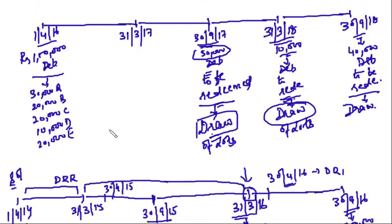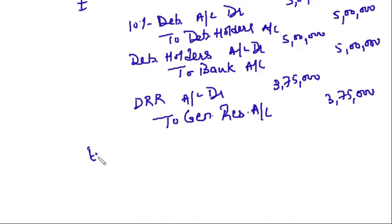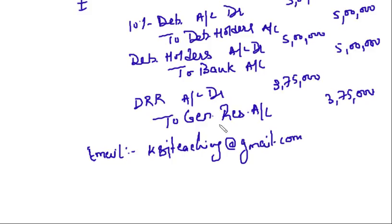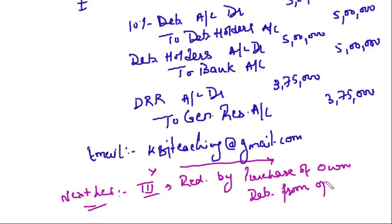I hope this is clear, friends — redemption in installments by draw of lots. If you have any queries, send me an email at ksj teaching at gmail.com. In the next lecture we are going to start with method three, that is redemption by purchase of own debentures from the open market. That's all for this lecture — thank you so much.